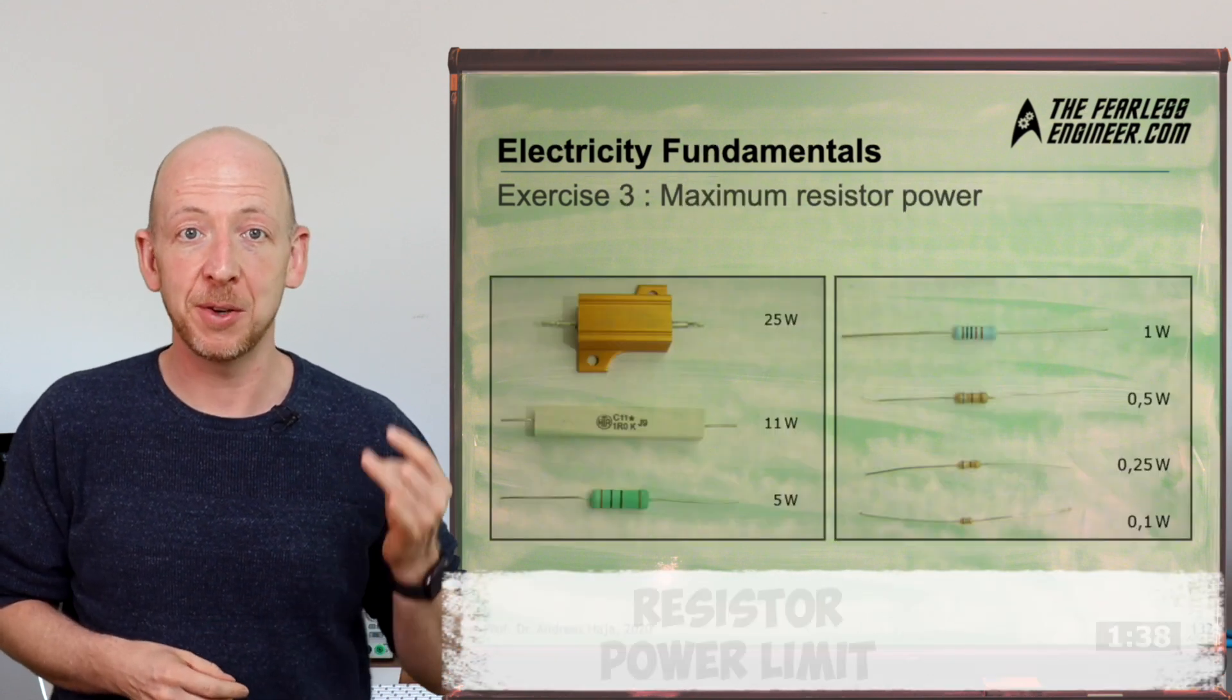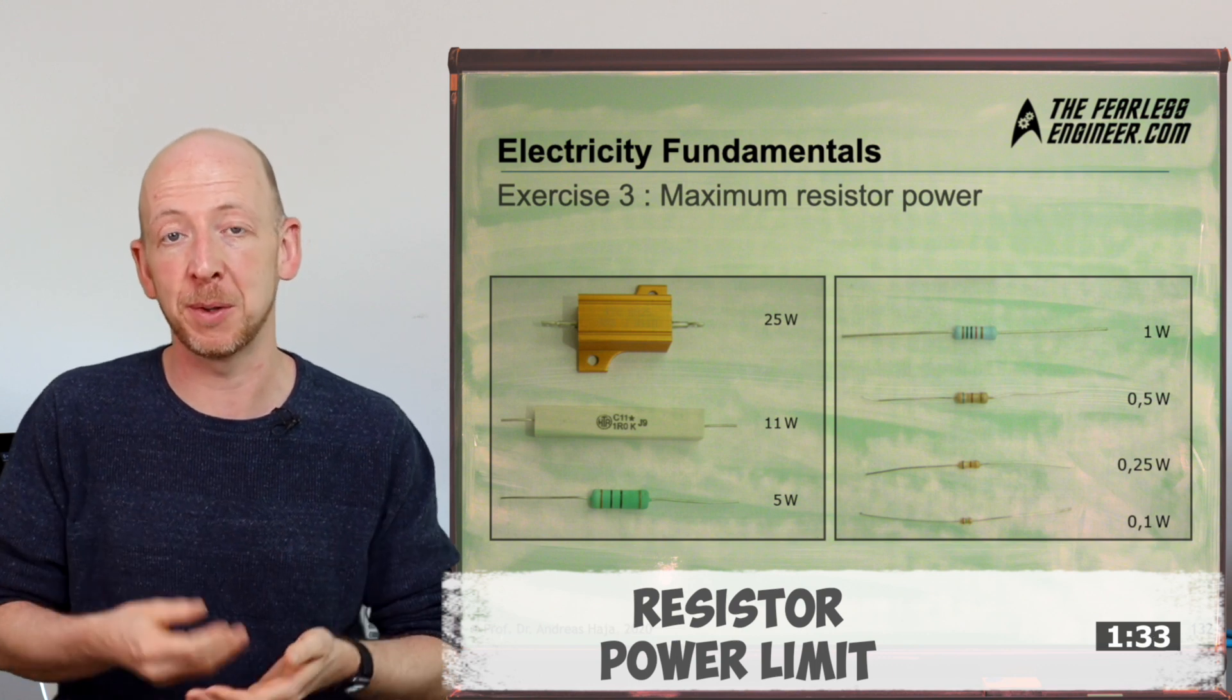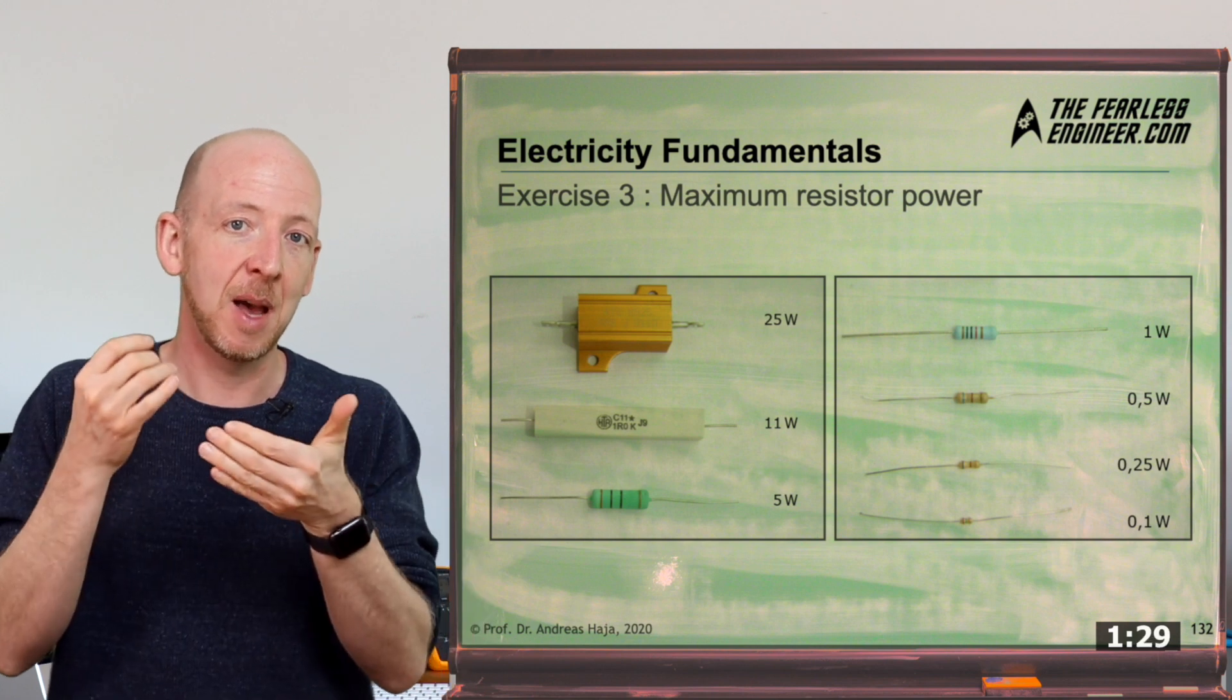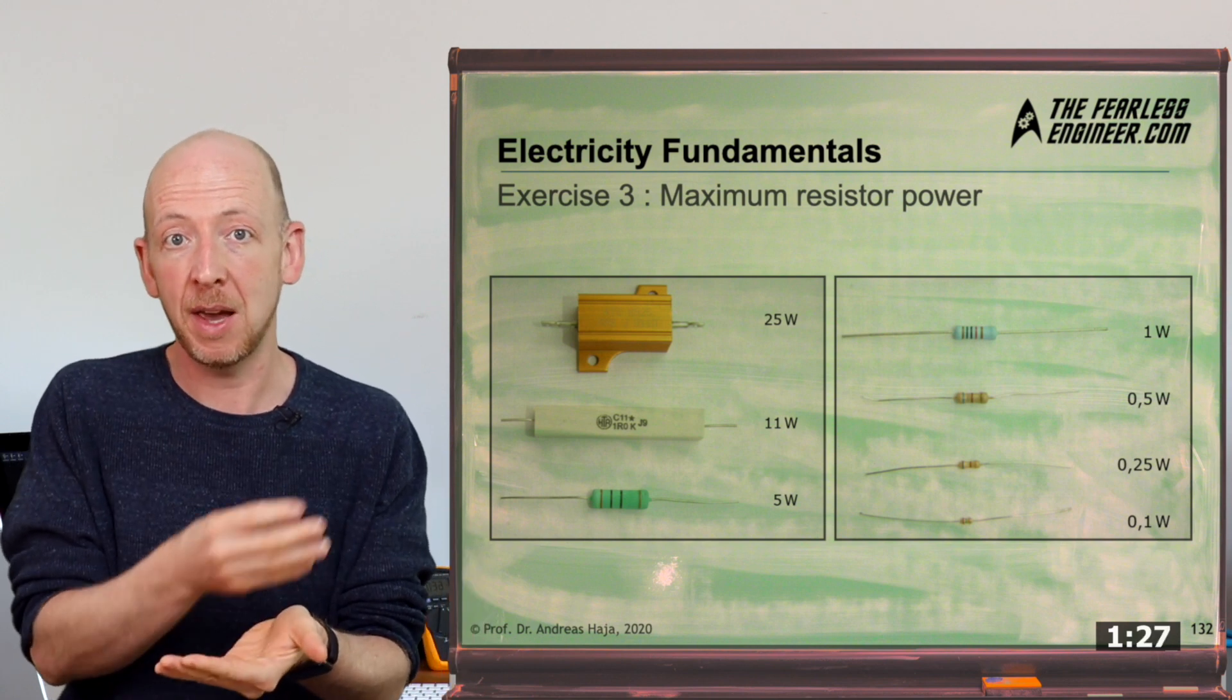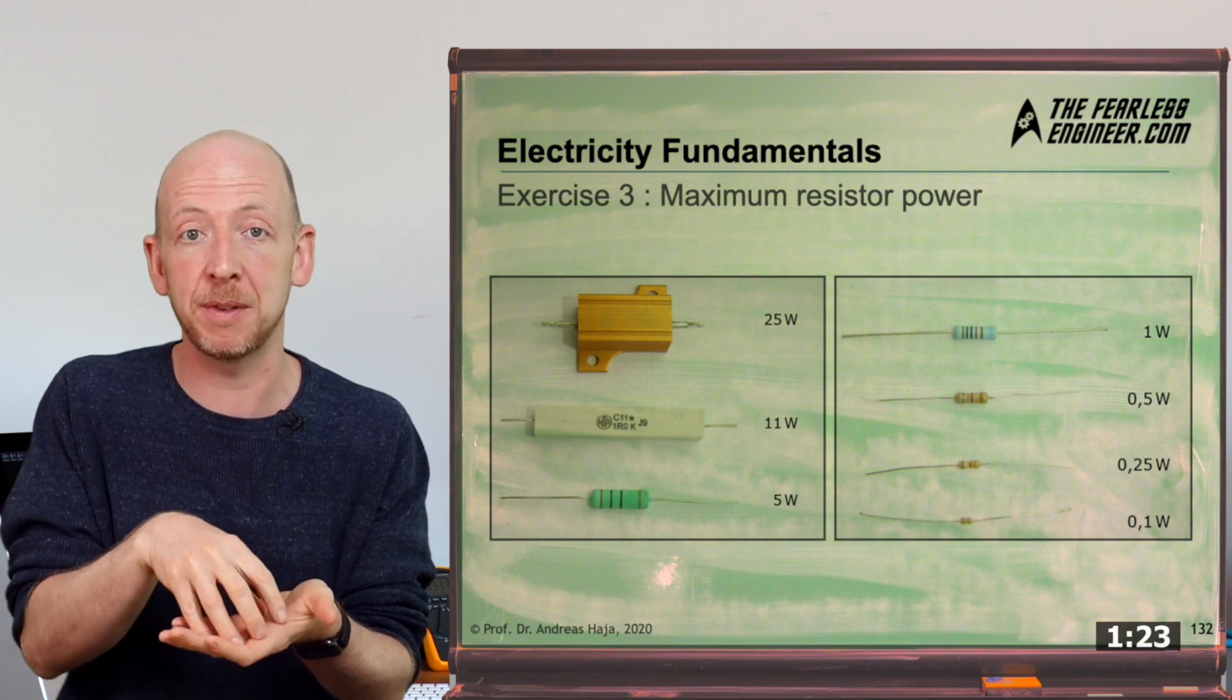When you design a circuit you have to make sure that the components in it don't get too much power and might be destroyed in the process. When you buy resistors, the label on the package usually indicates the maximum power they are designed for. If you don't have the package, then you can at least estimate it from the size of the resistor housing.